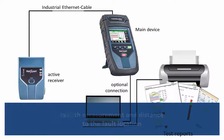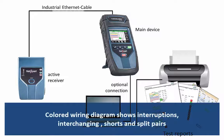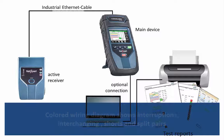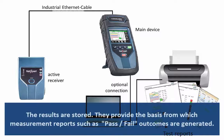The continuity check of all eight cables and shielding are shown in the full-color wire map. Faults due to interruptions, short circuits, miswires, and split pairs are clearly depicted. The NetExpert 1400 saves the results and produces colored protocols which document the cabling.